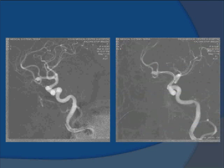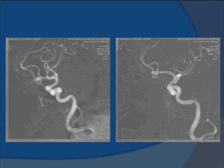Look at this next picture. You can see a little dot inside the aneurysm — that is the tip of the catheter which is inside the aneurysm. Now we know it is in position to start coiling.